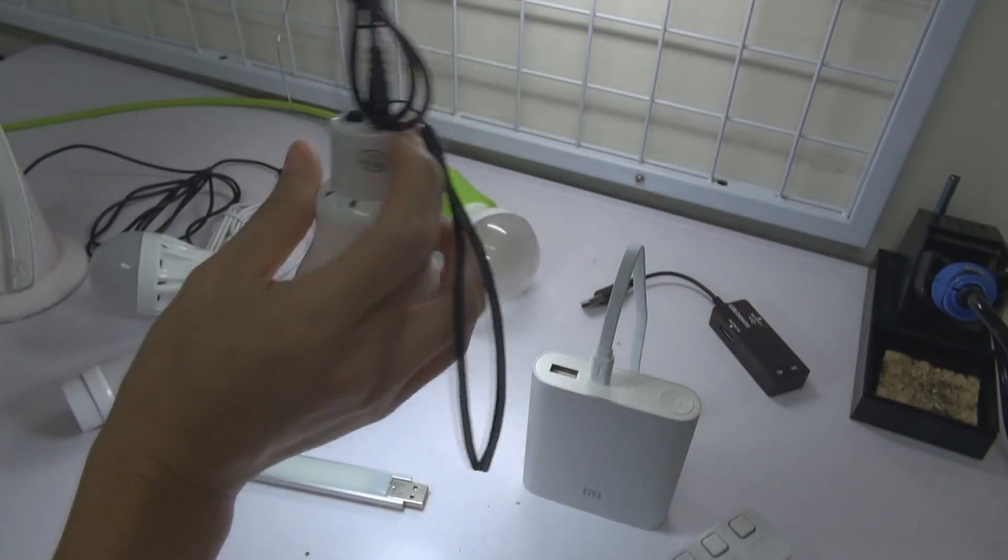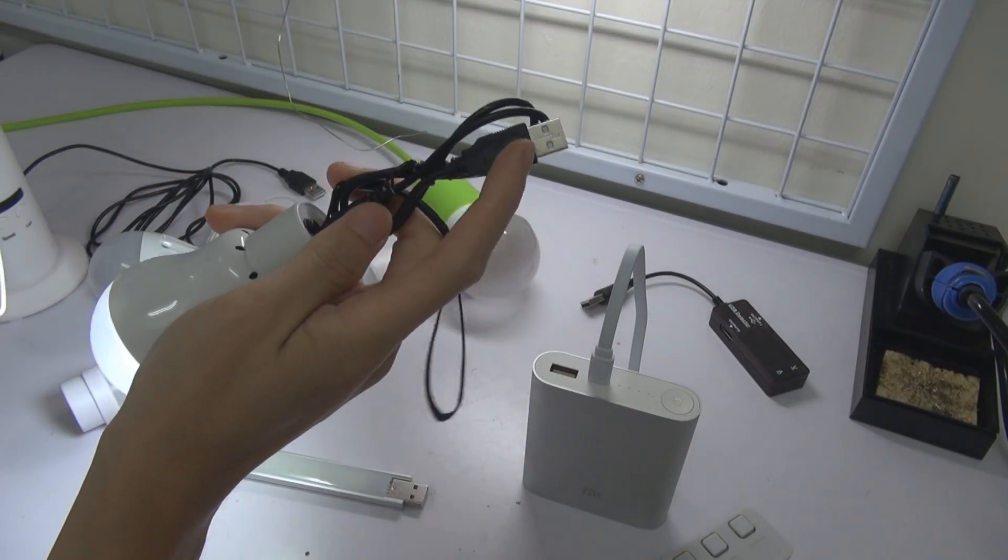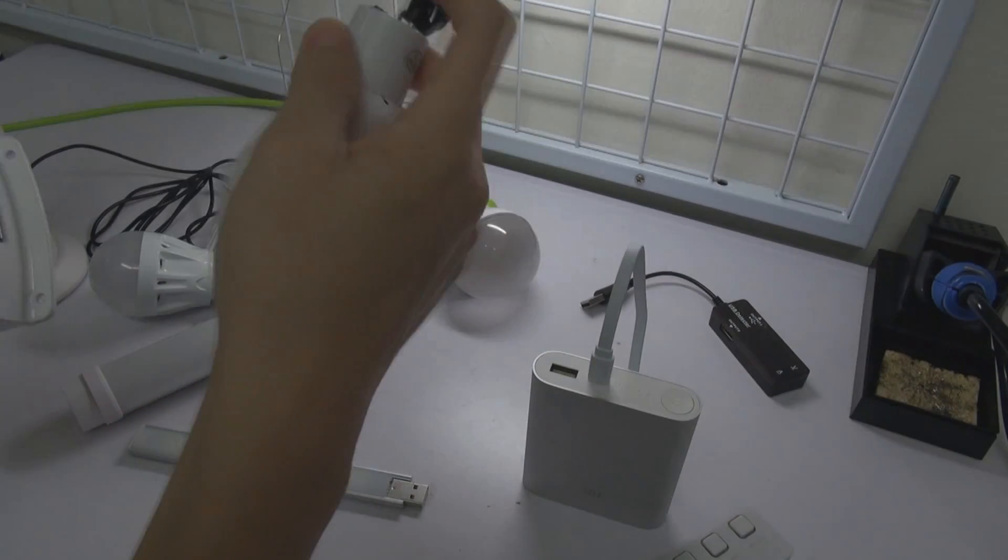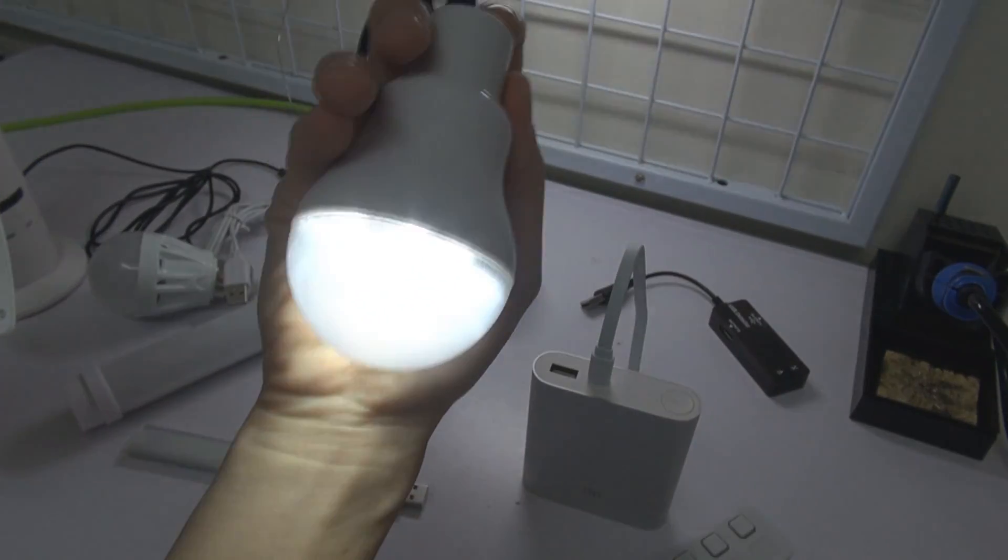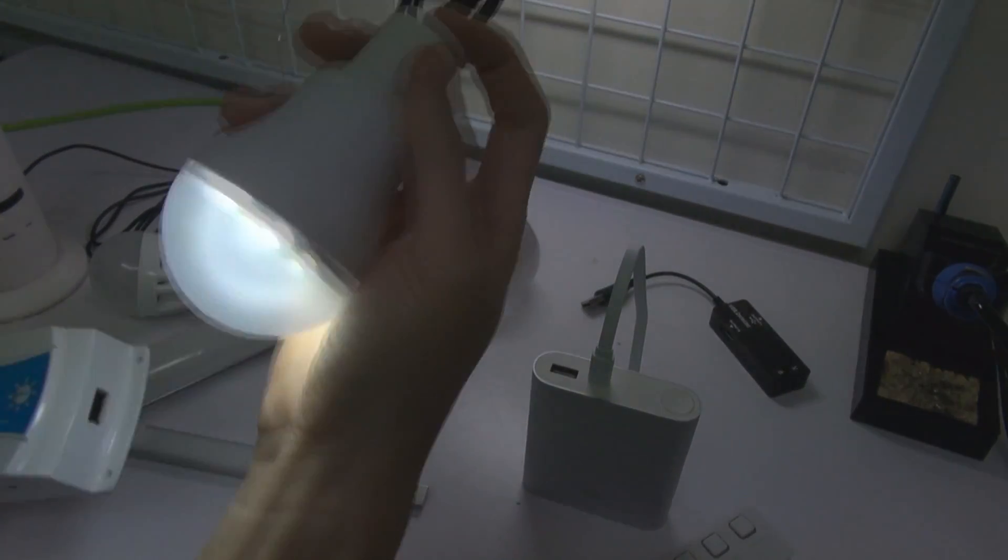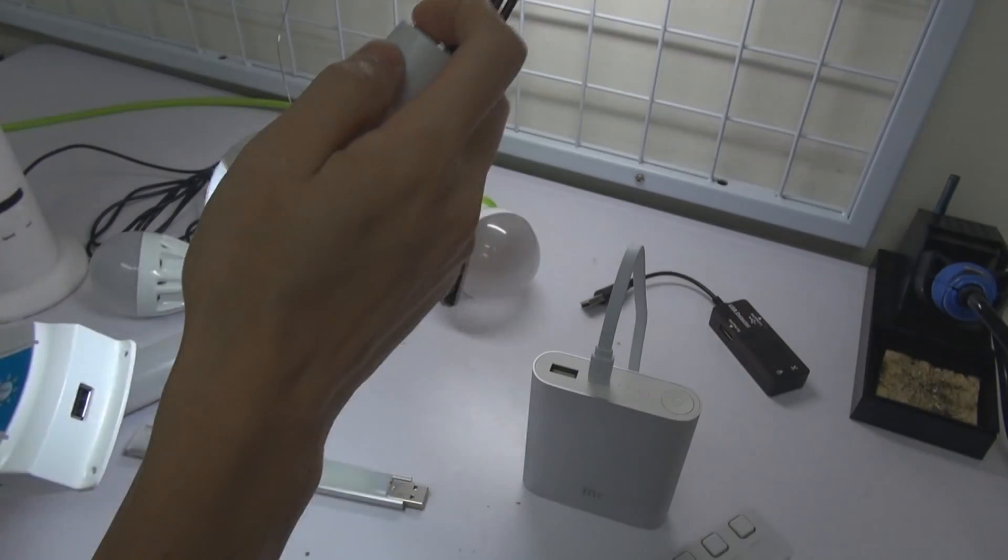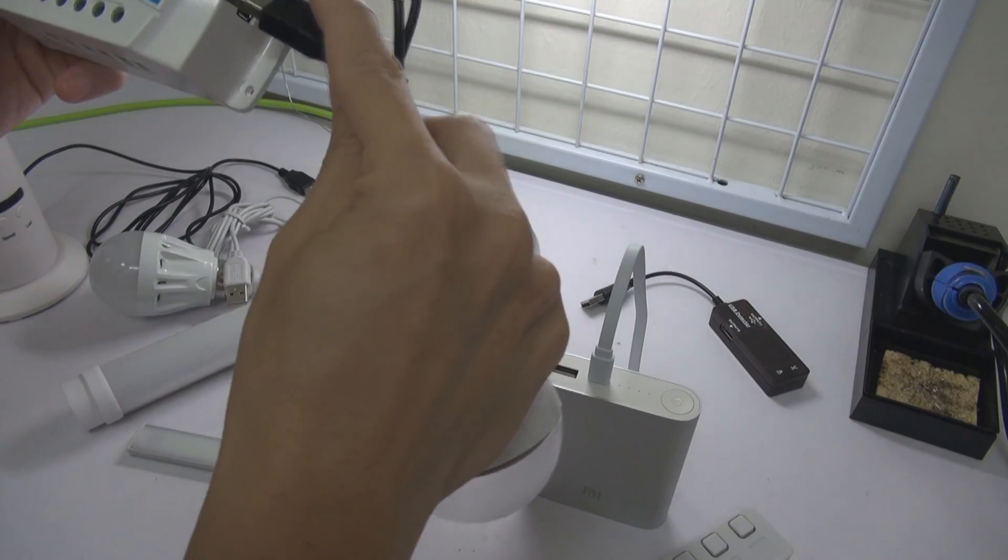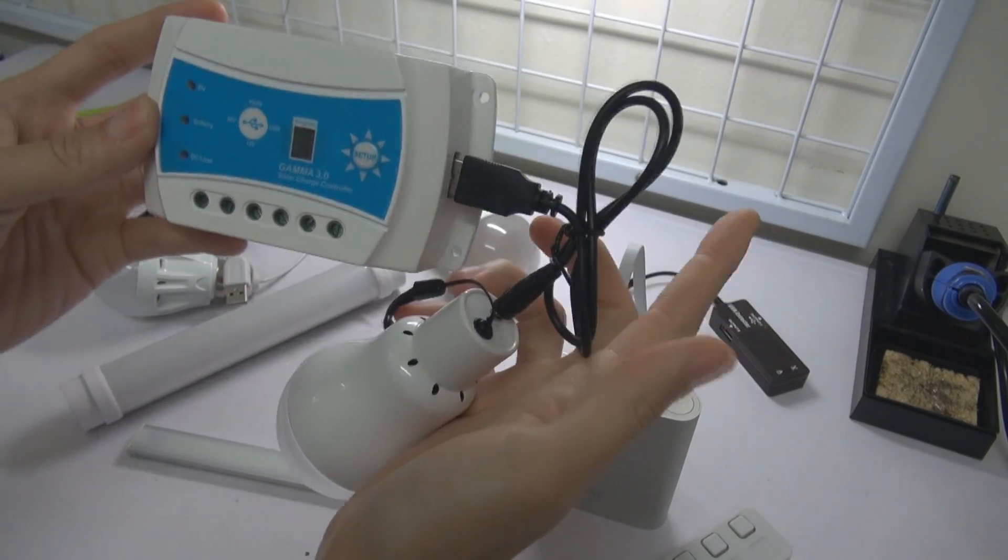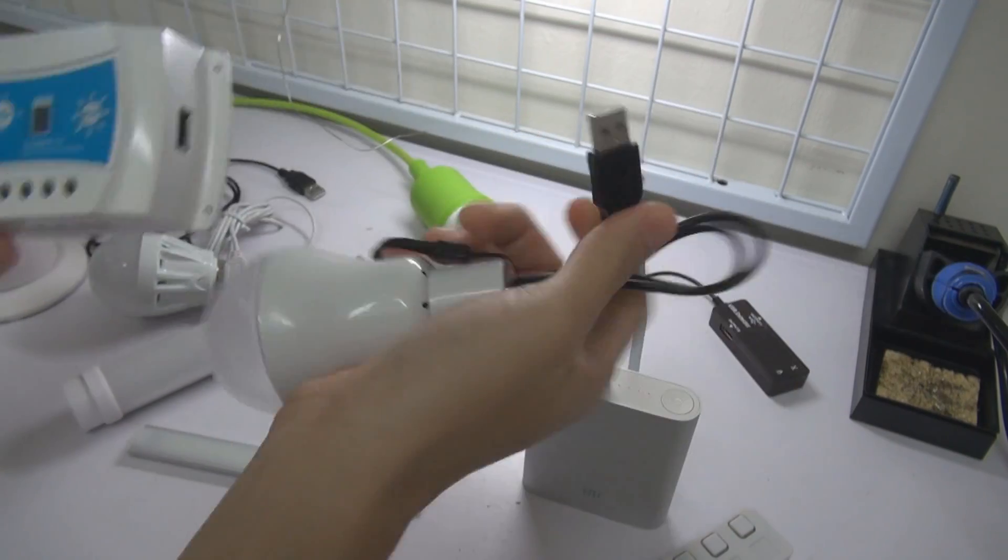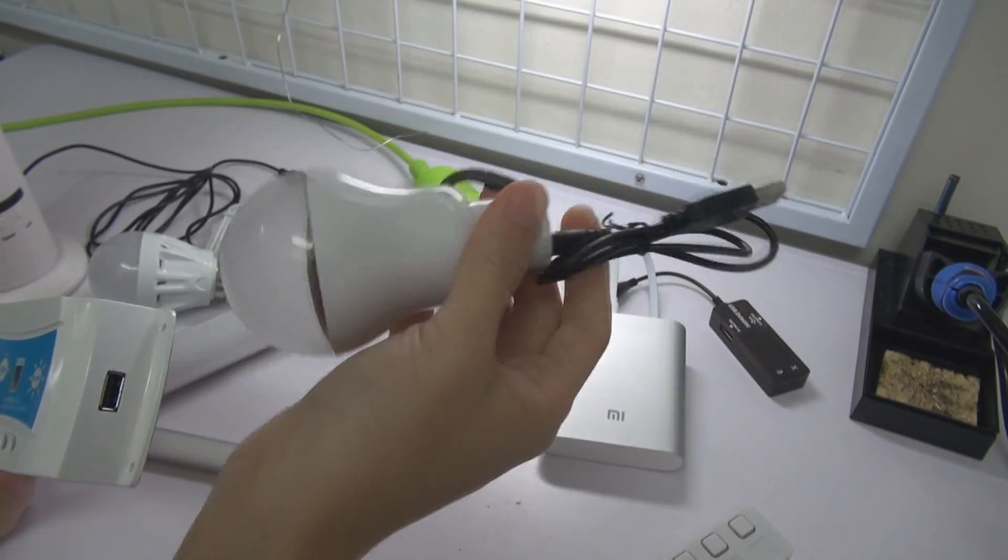So you can turn on the light even without USB. This model we call the Volt, B-O-L-T Volt. So it's very useful. You probably take about 3-4 hours to fully charge it, and this light will probably last the whole night. So the best thing is you just plug it and you just charge it. Once it's fully charged, you can use these things for the whole night.